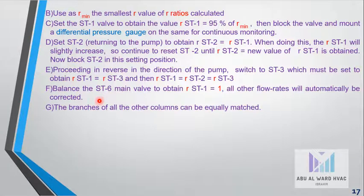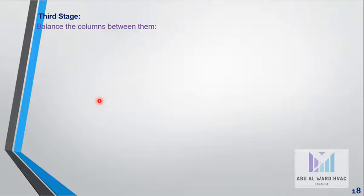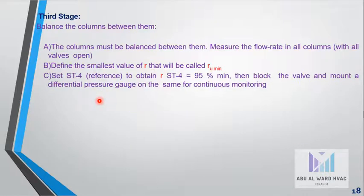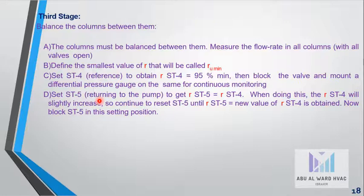In the third stage, we are going to balance the columns between them. Measure the flow rate in all columns with all the valves open. Define the smallest value of R, called R_u minimum. Set ST4 reference to obtain R_ST4 = 95% of R minimum and block the valve and mount the differential pressure gauge on the same for continuous monitoring. Set ST5, returning to the pump, to get R_ST5 = R_ST4. When doing this, R_ST4 will slightly increase, so continue to reset ST5 until R_ST5 new value equals the new value of R_ST4 obtained.